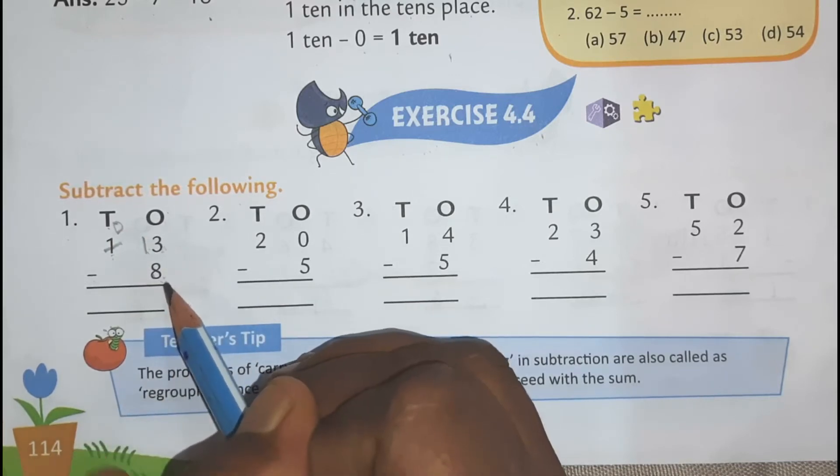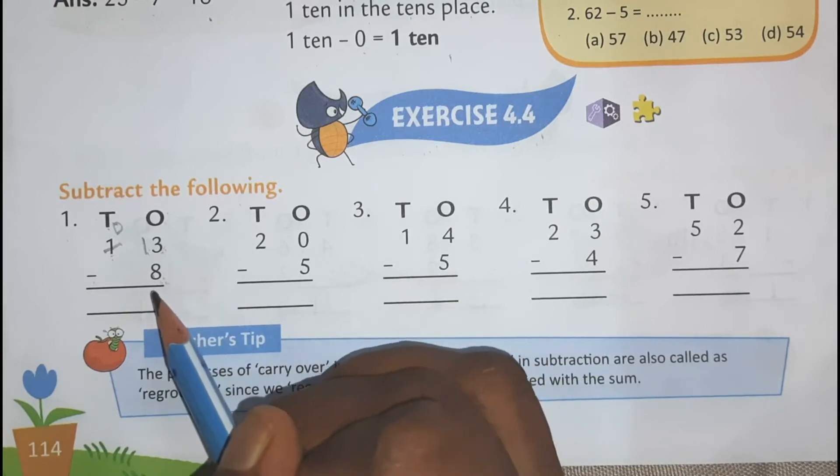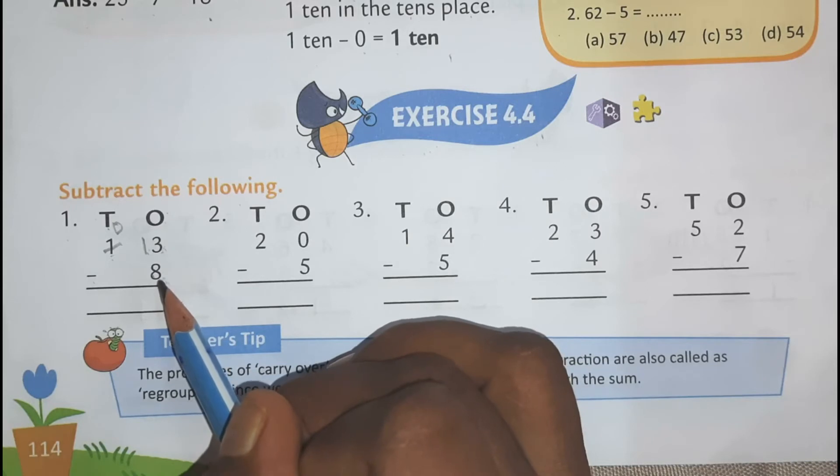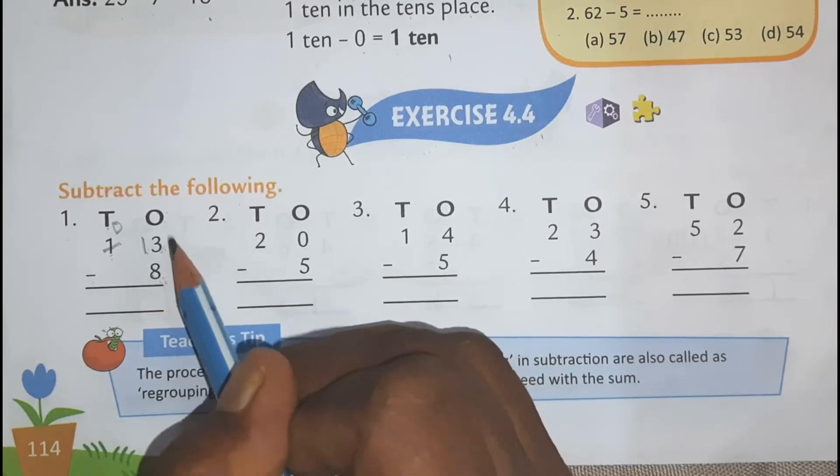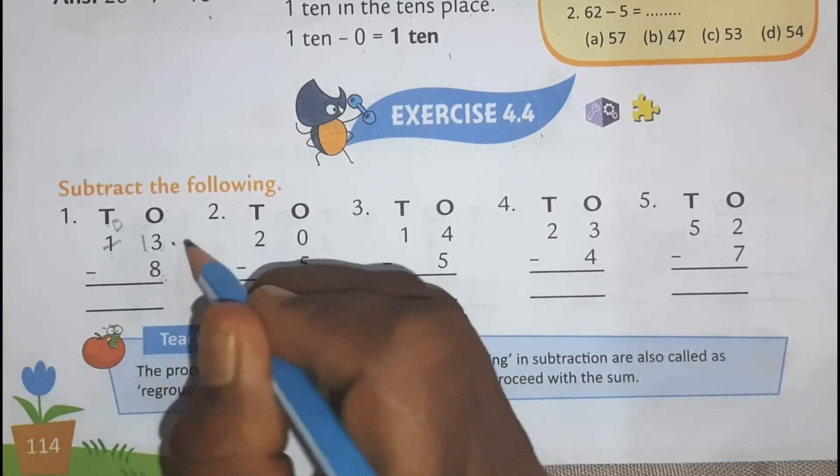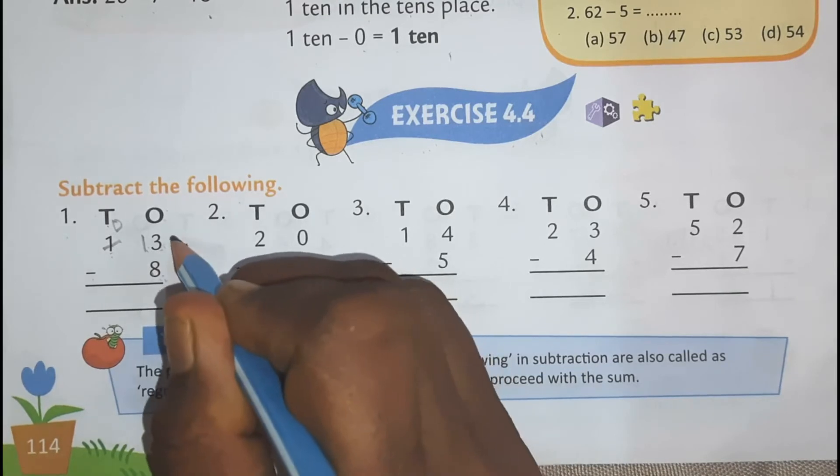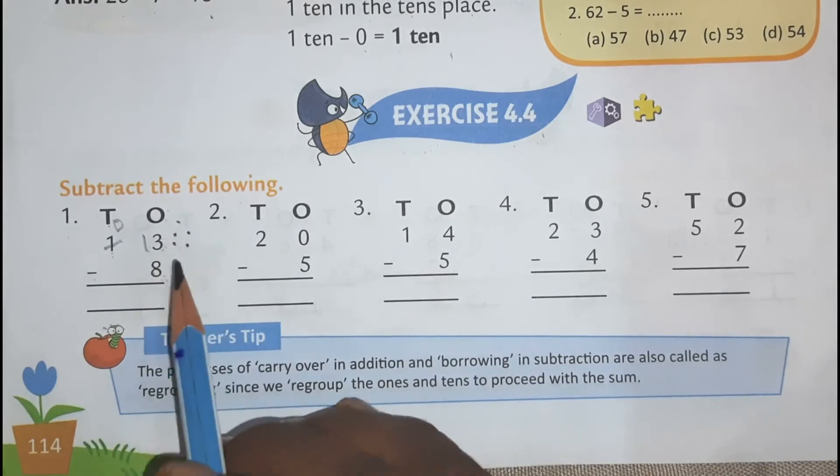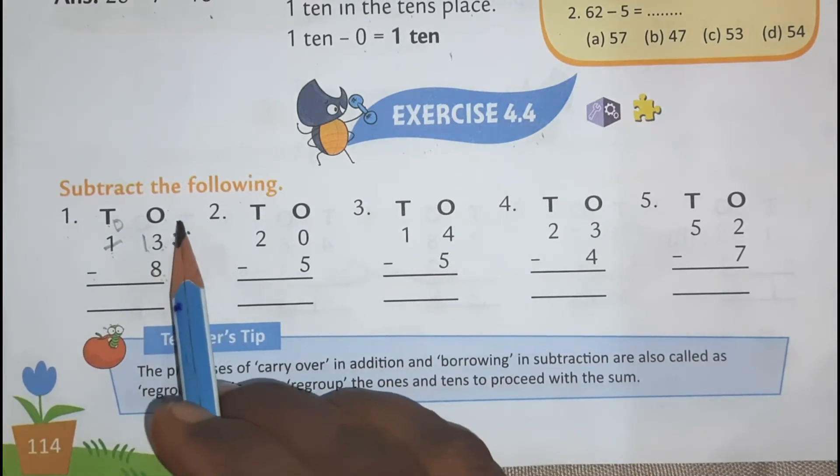So 13 minus 8. Now you have got one more method. You have to count from forward counting also. You can do 8 in the mouth. 9, 10, 11, 12, 13. So how many numbers are there? 1, 2, 3, 4, 5.